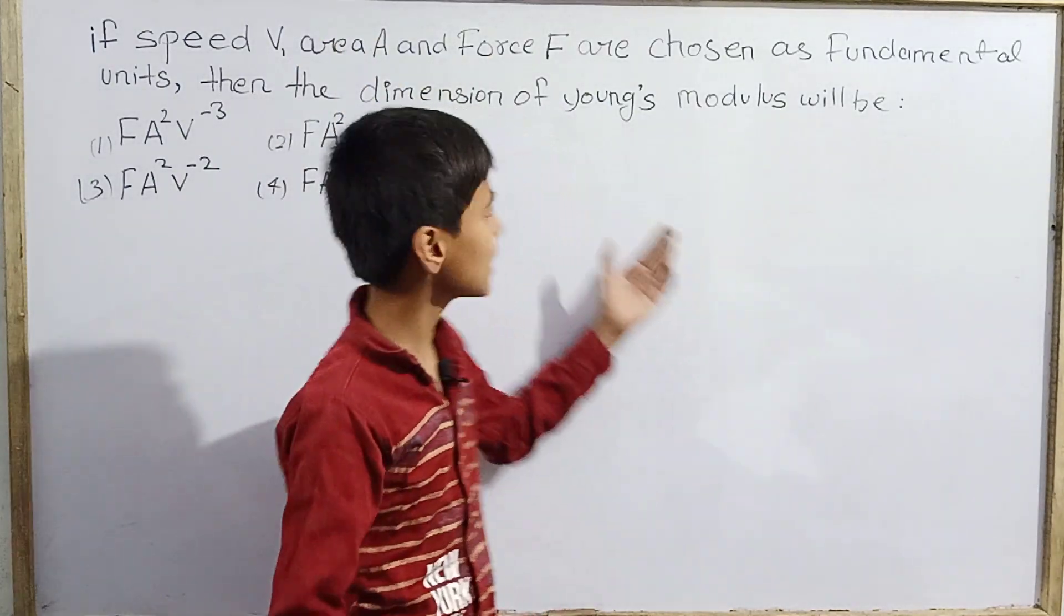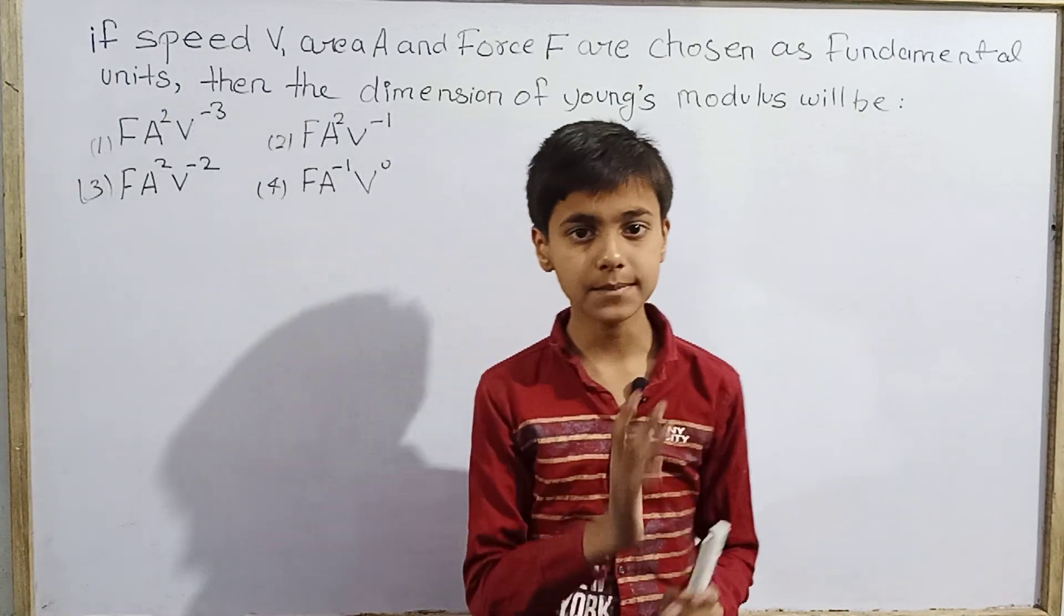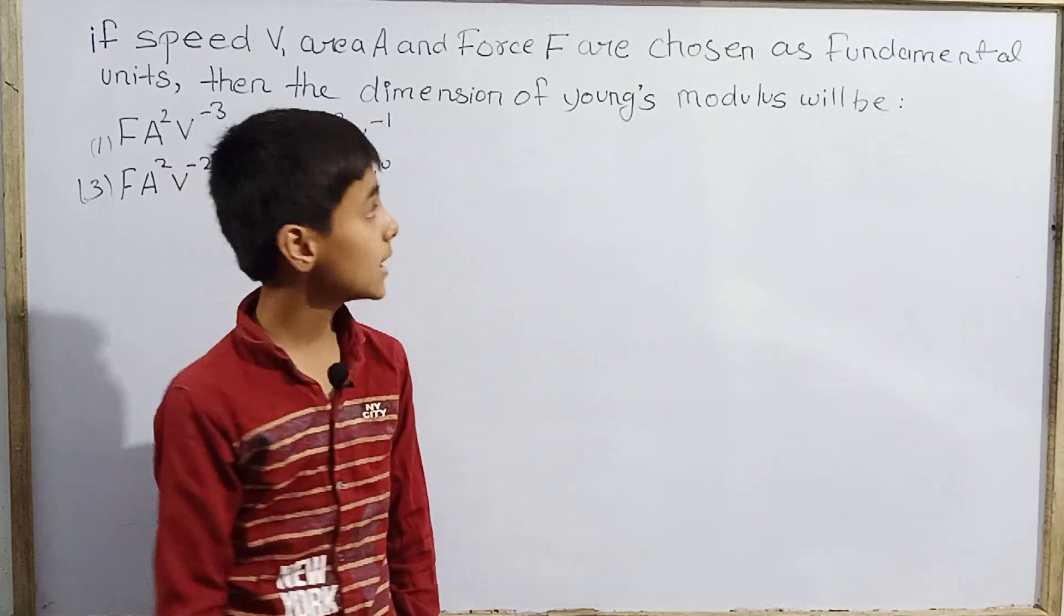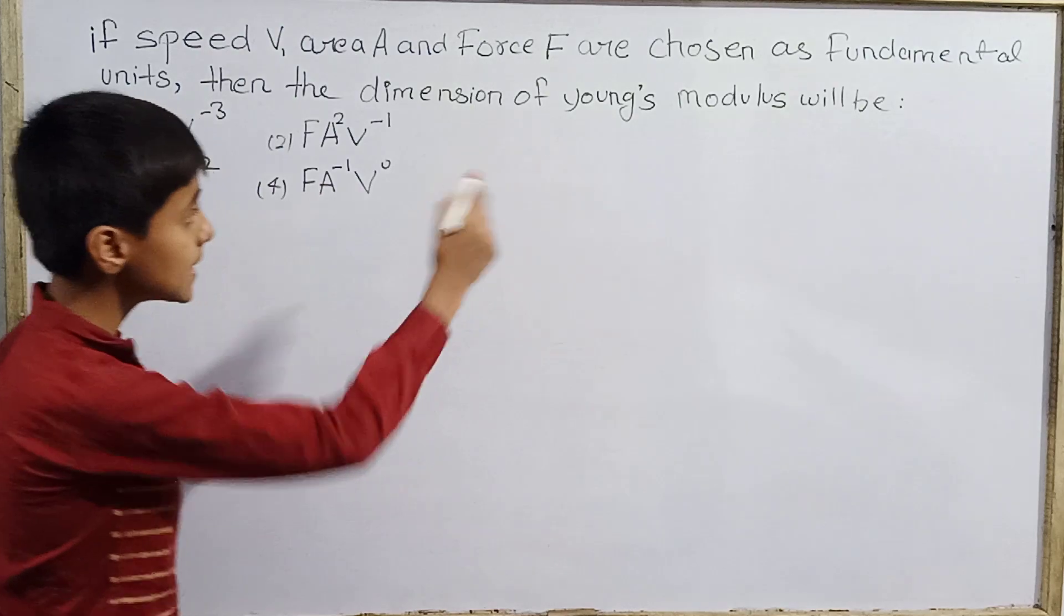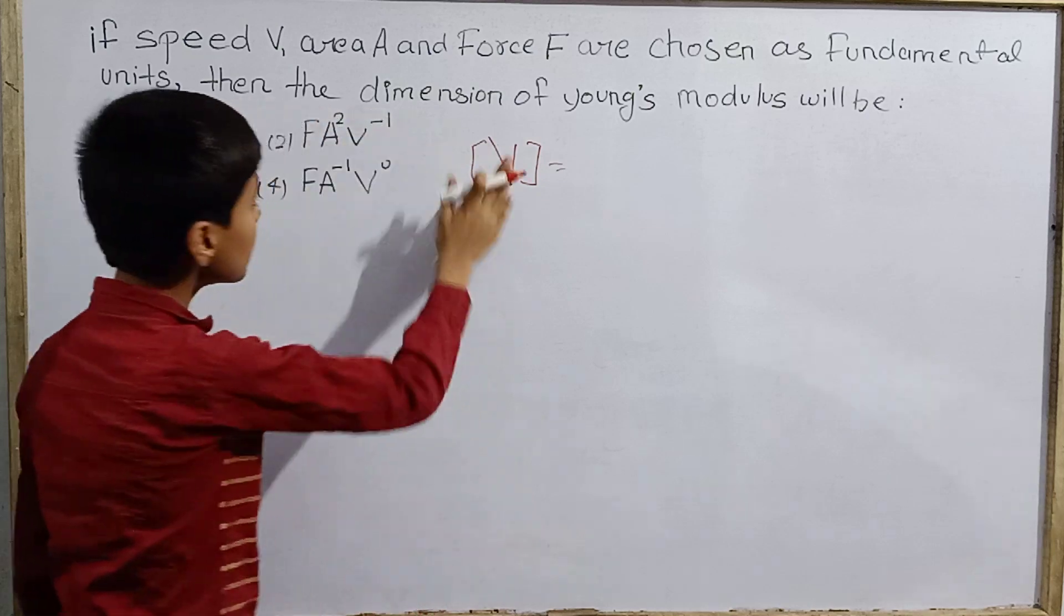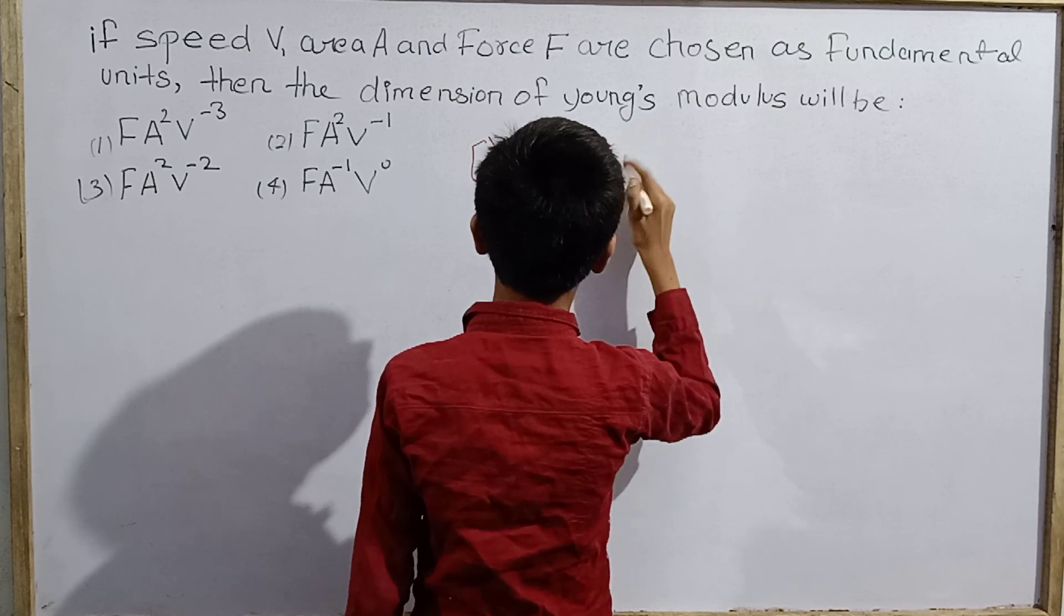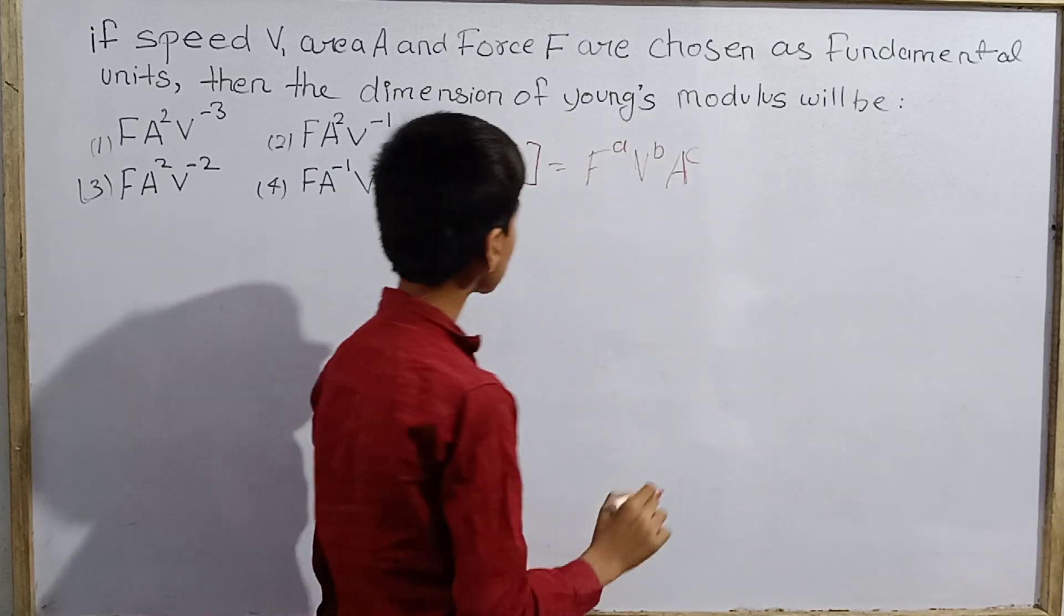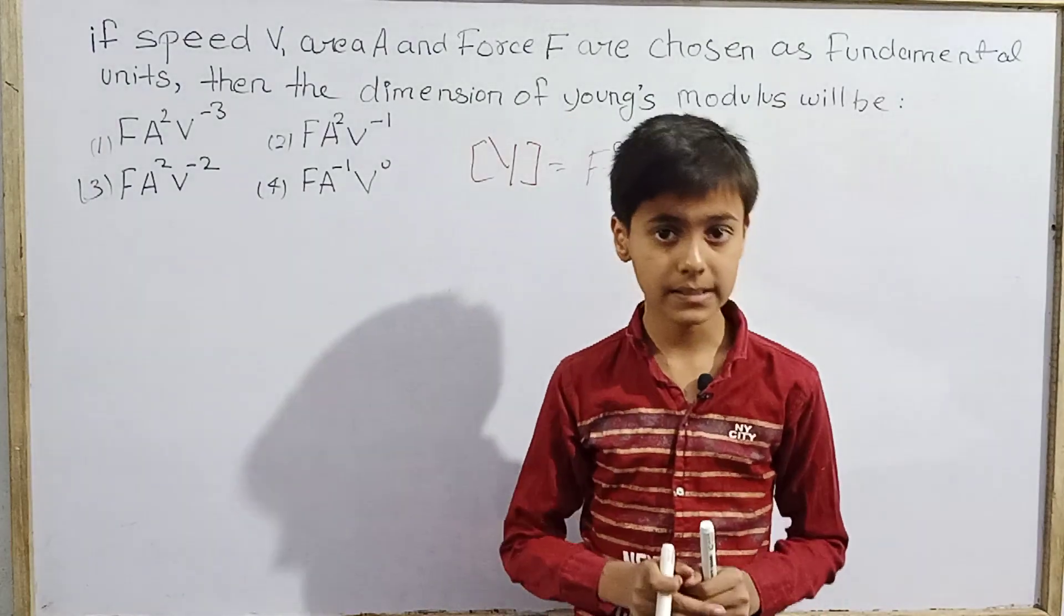Since seven base units are not among but we have left seven and selected these three, now any physical quantity except the base units themselves depend on the base units. If these three are base units, then Young's modulus will somehow depend on the base units. If I put Young's modulus as Y, then these three will depend on some exponents in the form. So we can consider F^a, V^b, and A^c. Basically I have a, b, and c as exponents of F, V, and A respectively.